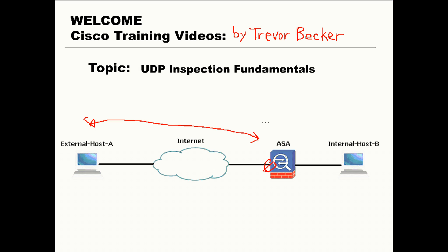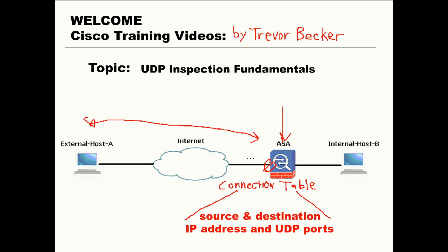As the UDP packet is permitted through the firewall, the ASA is going to inspect the source and destination IP address and UDP port numbers. This information is going to be documented as a connection in the connection table, and a stateful connection flow is going to be created. Any UDP packets between host A and host B over that port number can now pass back and forth freely. The ASA allows the connection to remain up as long as there are packets flowing through that connection.